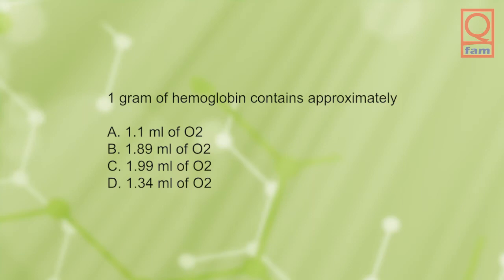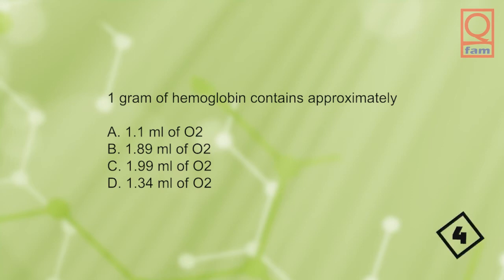1 gram of hemoglobin contains approximately: A) 1.1 milliliters of O2, B) 1.89 milliliters of O2, C) 1.99 milliliters of O2, D) 1.34 milliliters of O2. The answer is D, 1.34 milliliters of O2.